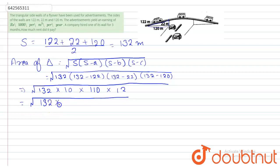132 times 10 times 11 times 10 times 12. So you have to solve this square root and you will get 1320